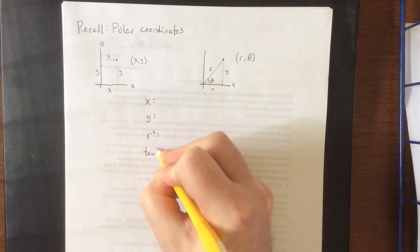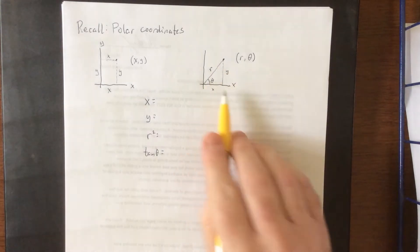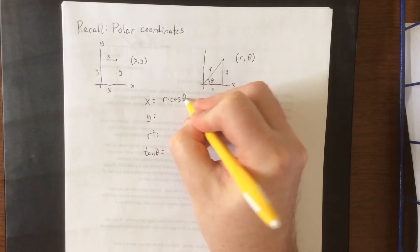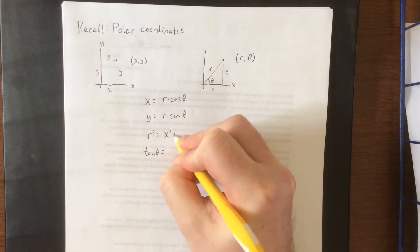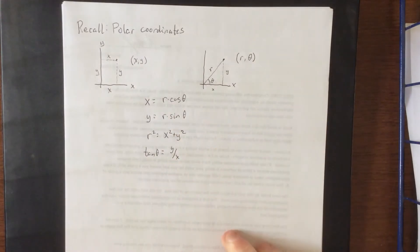There are four important conversions to know as far as polar coordinates are concerned. Based on a little bit of right triangle trigonometry over here, x is equal to r times the cosine of theta, y is equal to r times the sine of theta, r squared is equal to x squared plus y squared, and tangent of theta would be y over x.